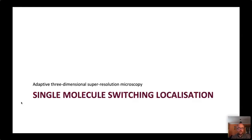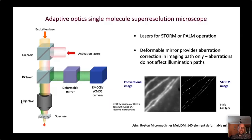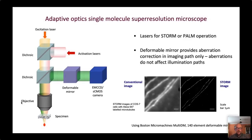In single-molecule switching localisation microscopy, the optical system uses a collection of lasers to illuminate the specimen and excite fluorescence, which passes back through the specimen, becomes aberrated by the specimen structure, then reflects off the deformable mirror onto the camera. The deformable mirror is used only in the emission path, as that is where aberrations matter — it doesn't affect the flood illumination path. Image formation involves acquiring tens of thousands or hundreds of thousands of blinking single-molecule images and reconstructing them into a super-resolution image showing far more detail than the conventional image.